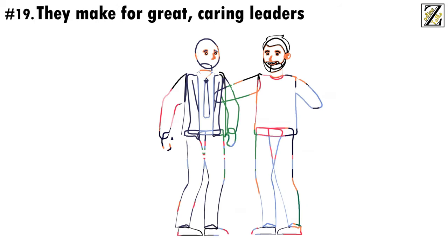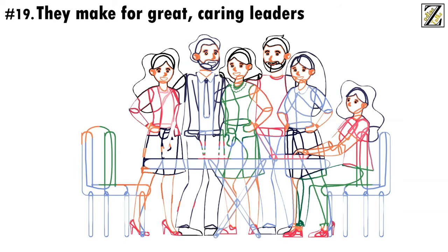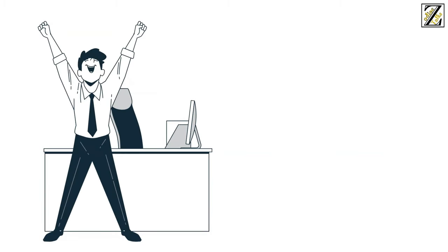Number 19. They make for great caring leaders. When Cancer reaches a leadership position, you can be sure that they'll worry about their subordinates and try to make their lives easier. They feel a significant level of responsibility for the people they're in charge of, and will go the extra mile to ensure everyone is satisfied and well cared for. Of course, this caring disposition can make Cancer a prime target for employees trying to abuse their trust, but that's a very bad idea because...